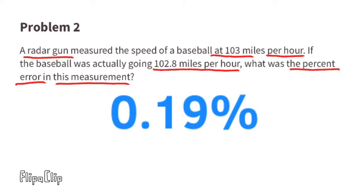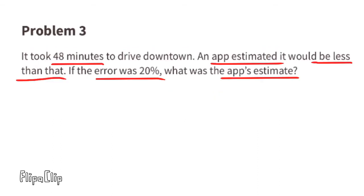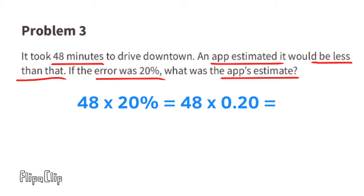Problem number three — it took 48 minutes to drive downtown. An app estimated that it would be less than that. If the error was 20 percent, what was the app's estimate? That would be 48 times 20 percent. Writing 20 percent as a decimal, that becomes 48 times 0.20, which equals 9.6.